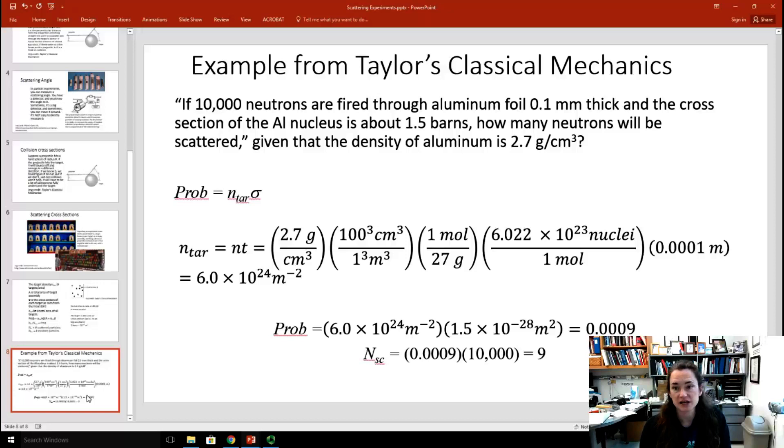The probability is equal to N sub tar times sigma. N sub tar is the number of scattering targets per unit cross sectional area. Let's say that instead of that, we know we have a three dimensional thing. For aluminum, we know the density, so that means that we can figure out the number of aluminum nuclei per unit volume. But we want the number of aluminum nuclei per unit cross sectional area, so we're going to multiply times the thickness.